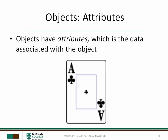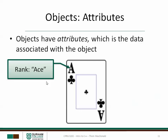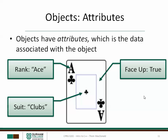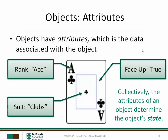Objects have attributes. An attribute is a piece of data that's associated with the object. For example, if we're looking at a playing card, a playing card has a rank — this particular playing card's rank is Ace. A playing card also has a suit; in this example, the suit is Clubs. A playing card could be FaceUp or FaceDown, represented with a Boolean value — FaceUp is equal to True in this particular case. All of the attributes for the object together are known as the object's state, and changing any one of these attributes will change the object's state overall.